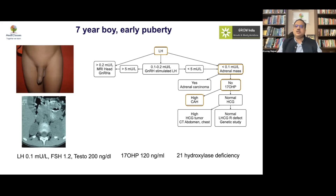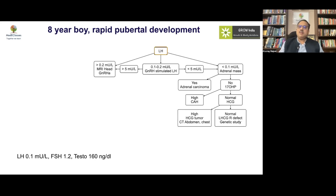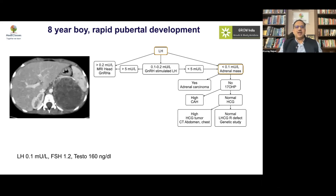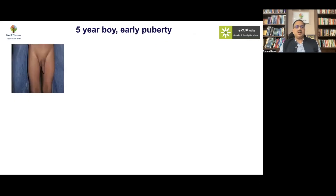An eight-year-old boy with rapid pubertal development again had low LH levels, indicating peripheral precocious puberty. Evaluation focused on the adrenals, revealing a large adrenal carcinoma. Importantly, in early pubertal development the adrenal carcinoma may be small and missed. Clinicians must be vigilant about sinister adrenal pathology as a cause of early pubertal development in boys.